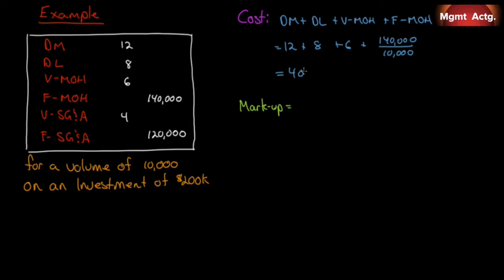So we'll have $12 plus $8 is $20 plus $6 is $26 plus $14. So our absorption cost is $40. Again, it absorbs all manufacturing costs regardless of behavior, whether it be variable or fixed. If it's a manufacturing cost, in it goes.